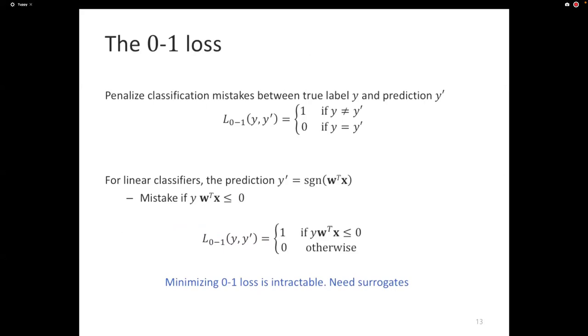The 0-1 loss is a loss function that penalizes mistakes. If you have a prediction, y prime and the ground truth, y. If y prime and y are different, the 0-1 loss takes the value 1. If y prime and y are the same, the 0-1 loss is 0. So the name kind of gives away the game. It's either 0 or it's 1.